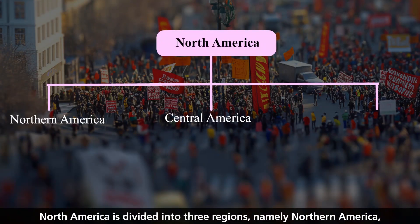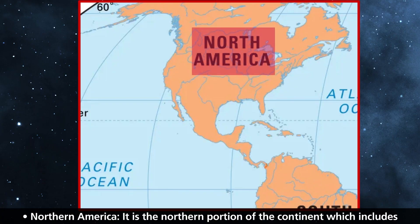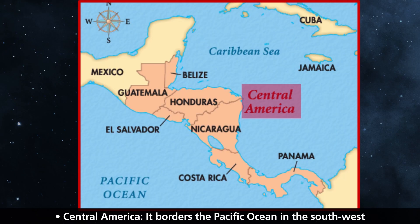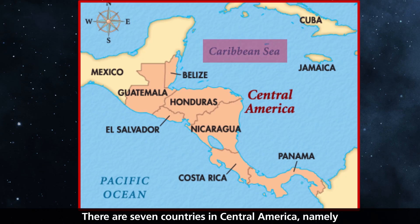North America is divided into three regions: Northern America, Central America, and the Caribbean. Northern America is the northern portion of the continent, which includes countries like Canada, the United States of America, and Mexico. Central America borders the Pacific Ocean to the southwest and the Caribbean Sea to the northeast.